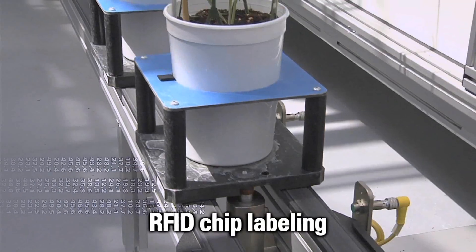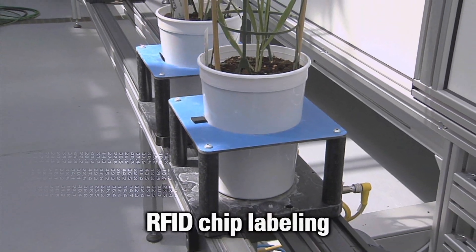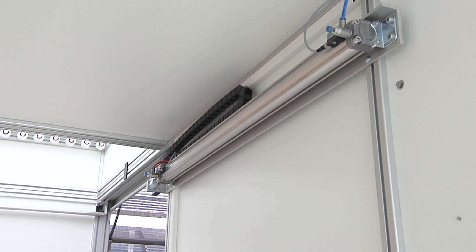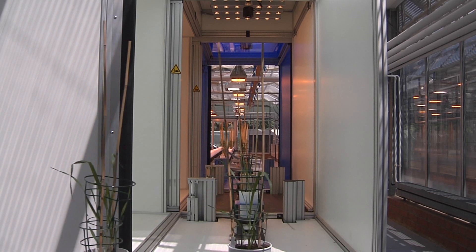By using latest RFID technology, each plant can be automatically identified and tracked throughout its whole life cycle in the greenhouse.